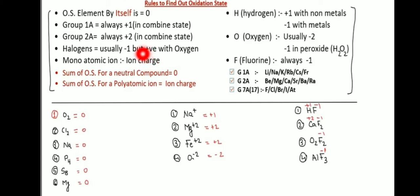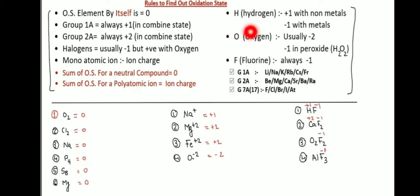Monoatomic ion: oxidation state equals ion charge. Sum of oxidation states for a neutral compound is zero. Sum of oxidation states for a polyatomic ion equals the ion charge. Hydrogen oxidation state: plus one with non-metals, minus one with metals.